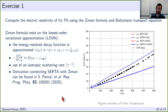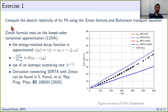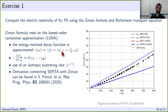There is actually a more approximated way to compute the resistivity, and this is called the Ziman formula. This rests on the lowest order variational approximation, also called LOVA. In that approximation, you start from the SERTA Boltzmann transport equation and do additional approximations — saying that the energy-resolved decay function is basically evaluated at the Fermi level.